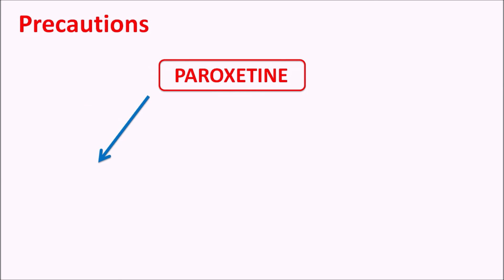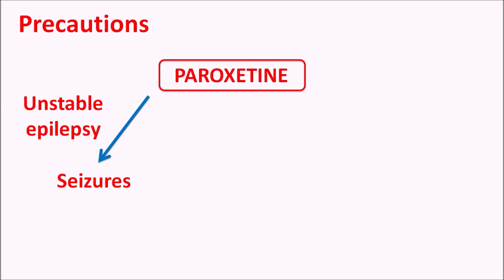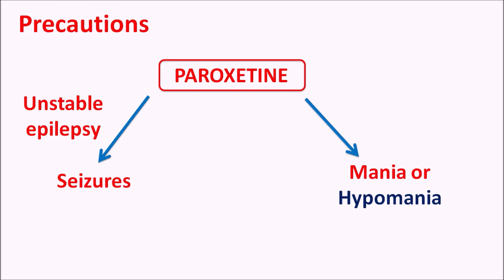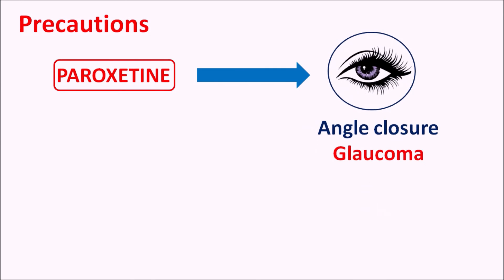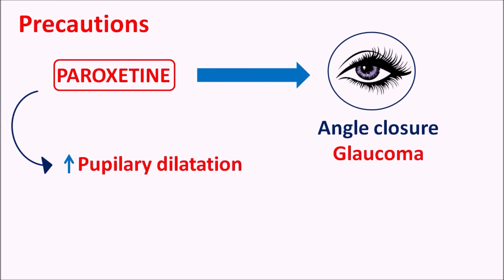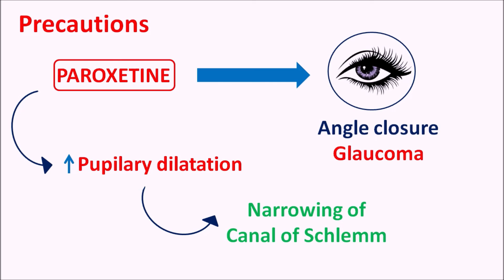Paroxetine can also increase the risk of seizures, particularly in patients with unstable epilepsy. It can also increase mania or hypomania in patients, depending on dose and duration of treatment. Another important effect is on the eye — it can produce angle closure glaucoma. Paroxetine increases pupillary dilation, which narrows the canal of Schlemm, increasing intraocular pressure and the risk of angle closure glaucoma. In such patients, paroxetine should not be used.